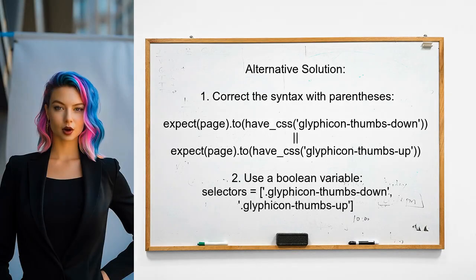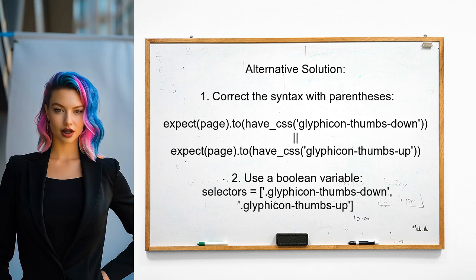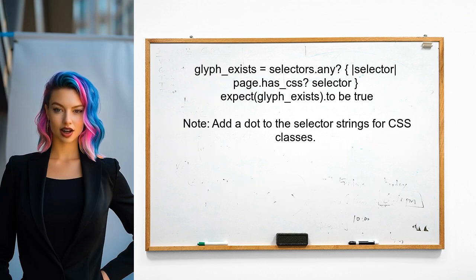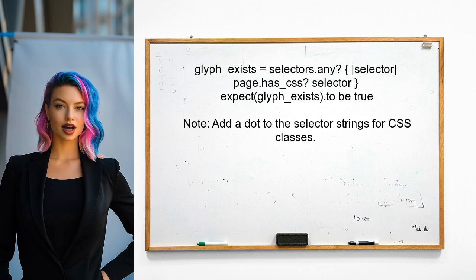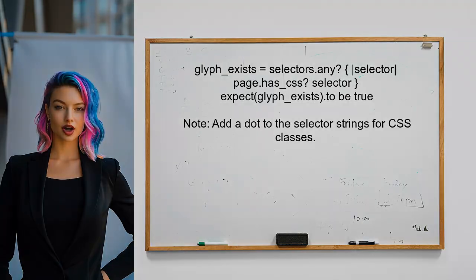Another alternative solution suggests correcting the syntax error by adding parentheses around the expectations. However, this won't solve the issue since RSpec will stop if the first condition fails. Instead, they recommend using a boolean variable to check for the presence of either class, using the Capybara method `has_css?` to evaluate the selectors.